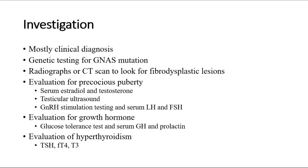McCune-Albright syndrome is mostly a clinical diagnosis. Investigations include genetic testing for GNAS mutation and radiographs or CT scan to look for fibrodysplastic lesions. Evaluation for precocious puberty involves testing serum estradiol and testosterone, testicular ultrasound in males, and GnRH stimulation testing with serum LH and FSH.